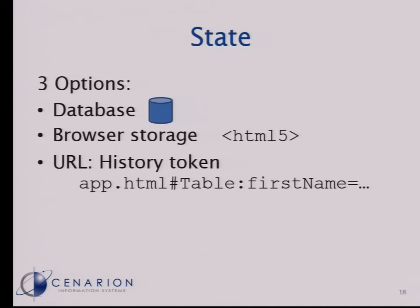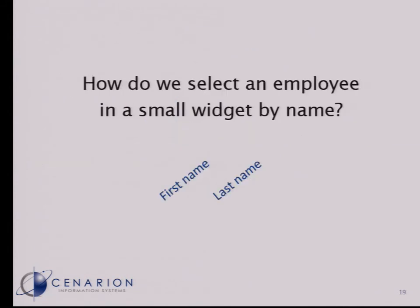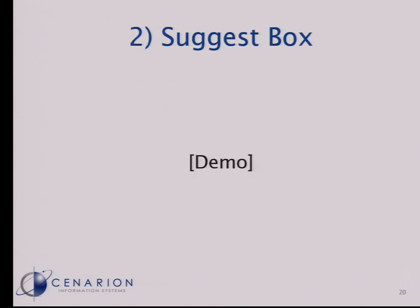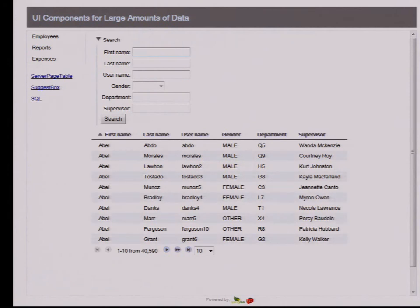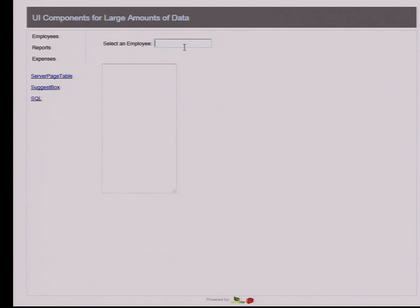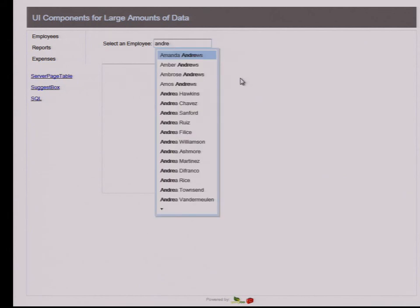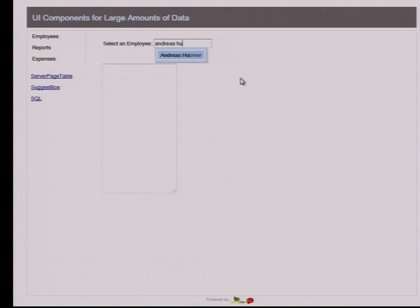That was how to select one employee among many employees using the tabular component. The second example is a suggest box. We have maybe just a small amount of screen space available to select one employee by first name and last name. Here we have the suggest box for an employee — it's an autocompletion feature. We start typing and then get all those users that have this string in their first or last name.